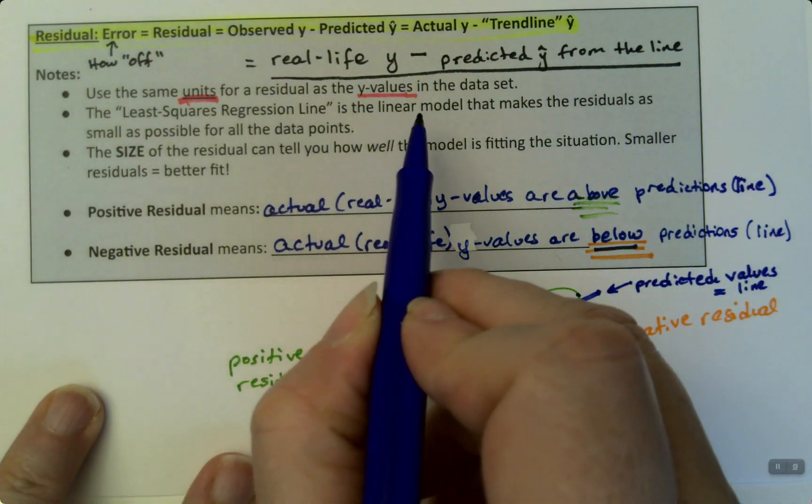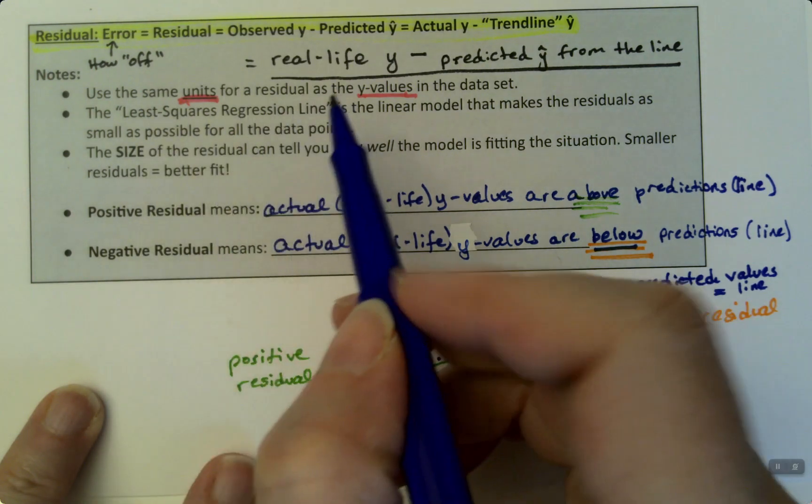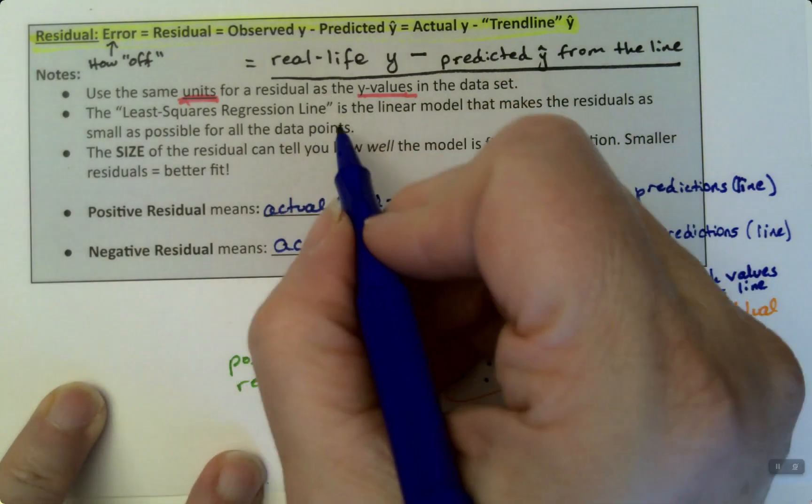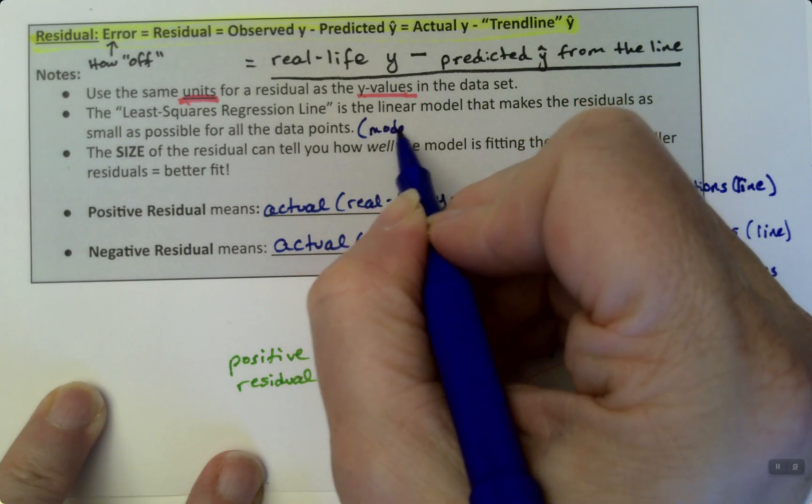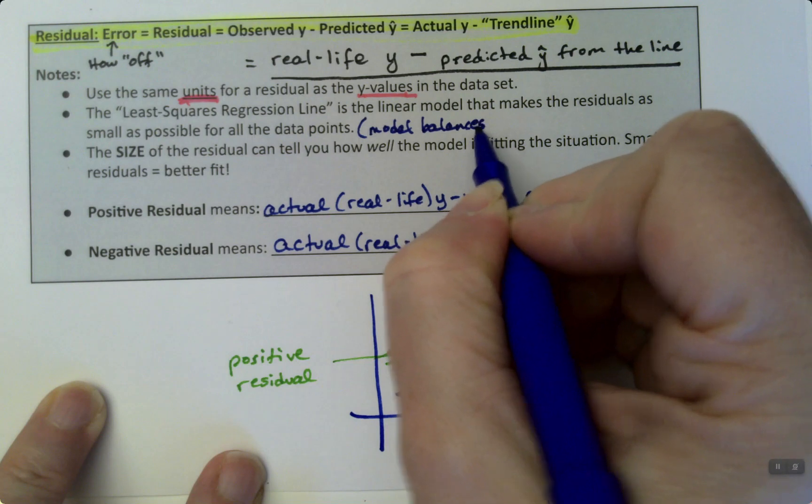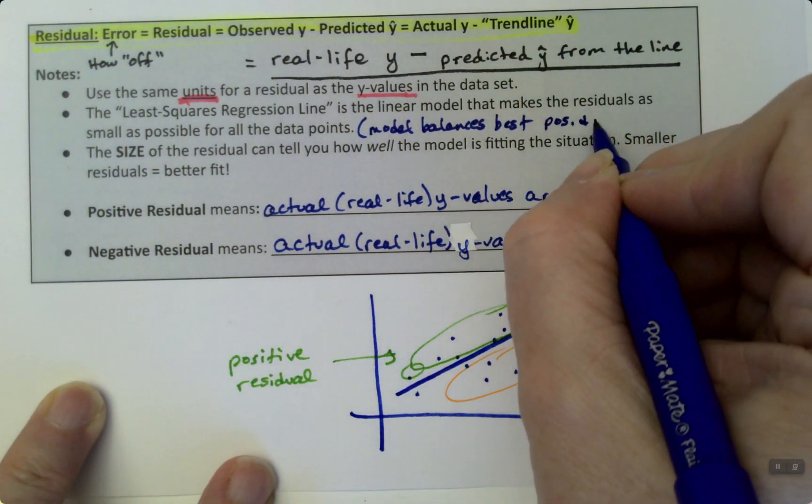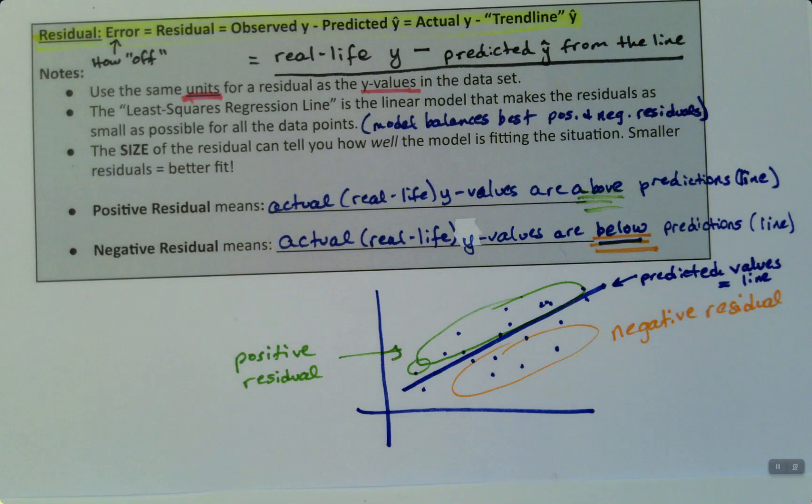Next, I will say this a lot of different ways. So I'll say the least squares regression line, the linear regression line, the linear model. I'll say it a whole bunch of different ways. The best line is the line that makes those residuals the smallest they can be. That's what makes it the least squares regression line. That's why it's called that. It's because it balances out the positives and negatives, residuals the best they can possibly be. So the least squares regression model is the model that does the best job. The model balances best the positives and negatives residuals and also makes them as small as they can be. The size of the residual can tell you how well the model is fitting the situation. Smaller residuals generally means a better fit.